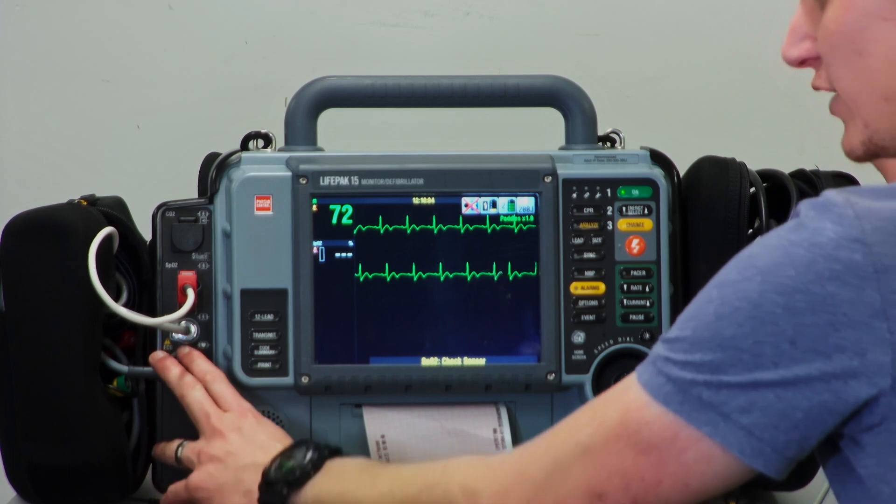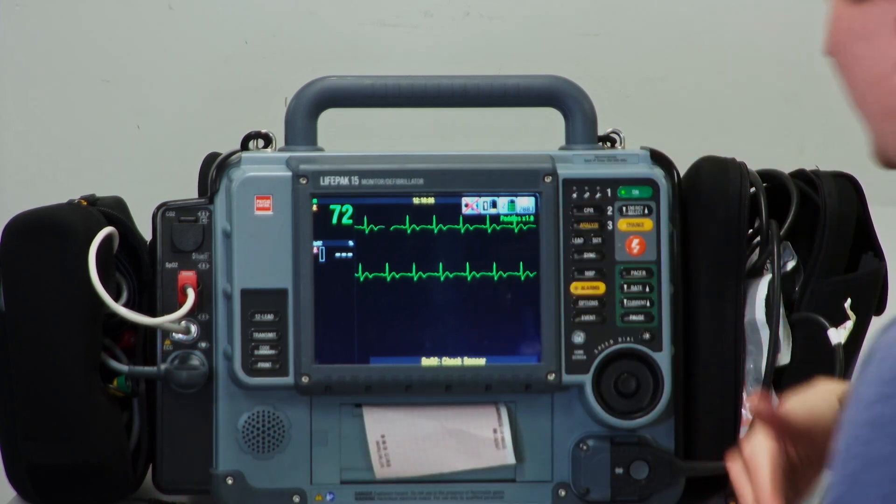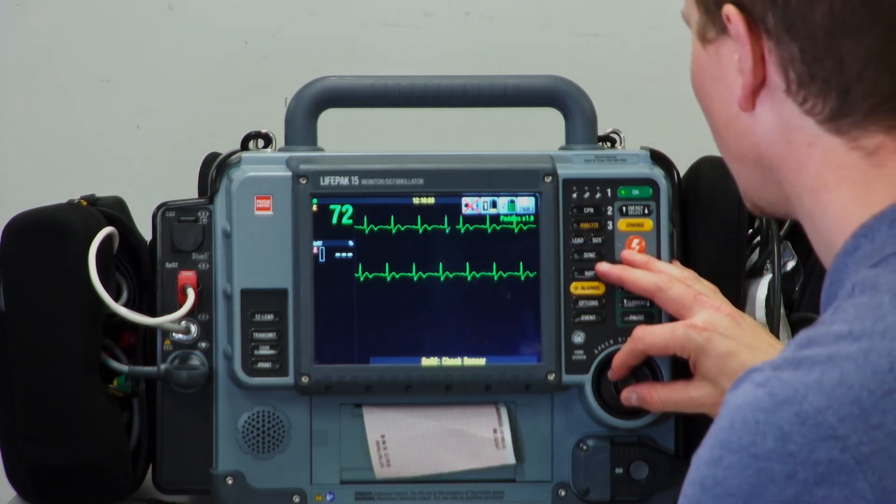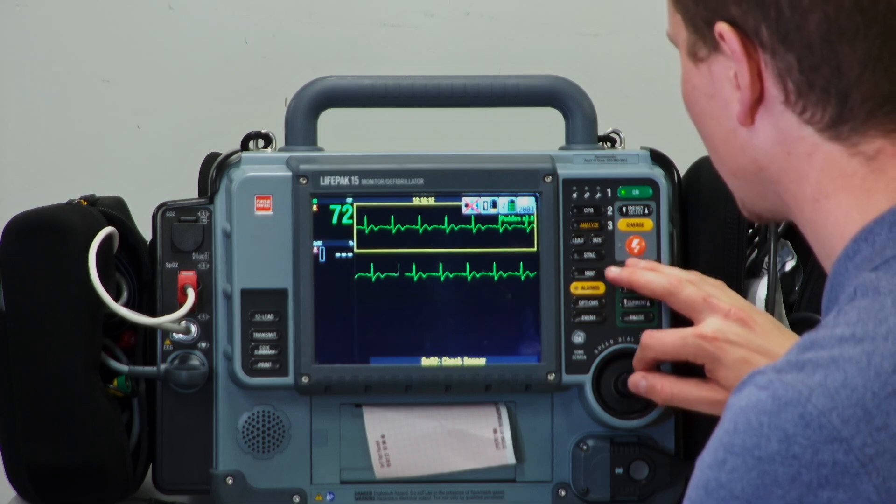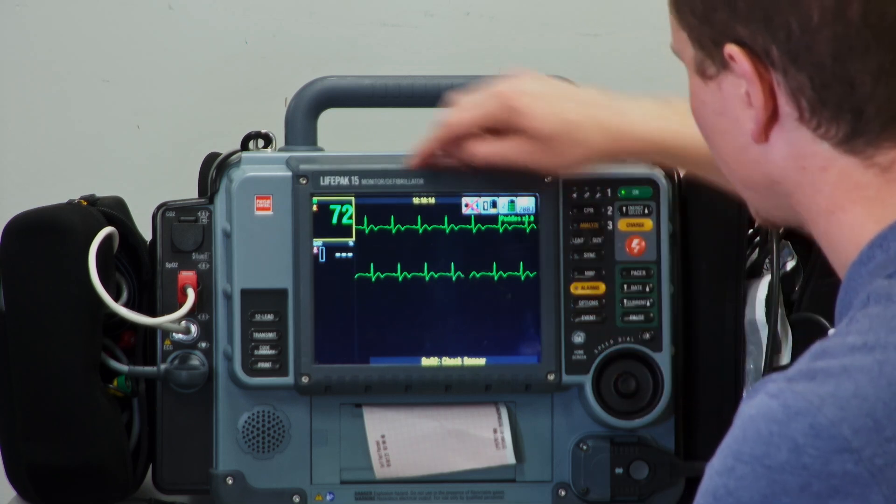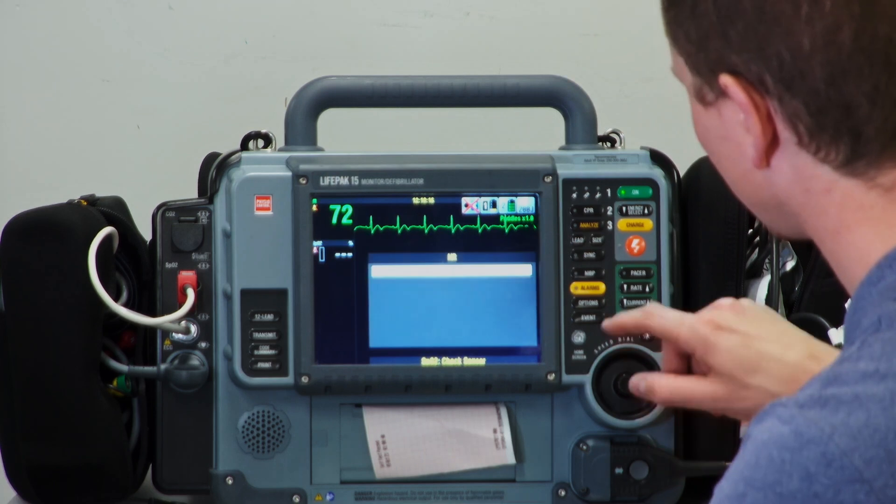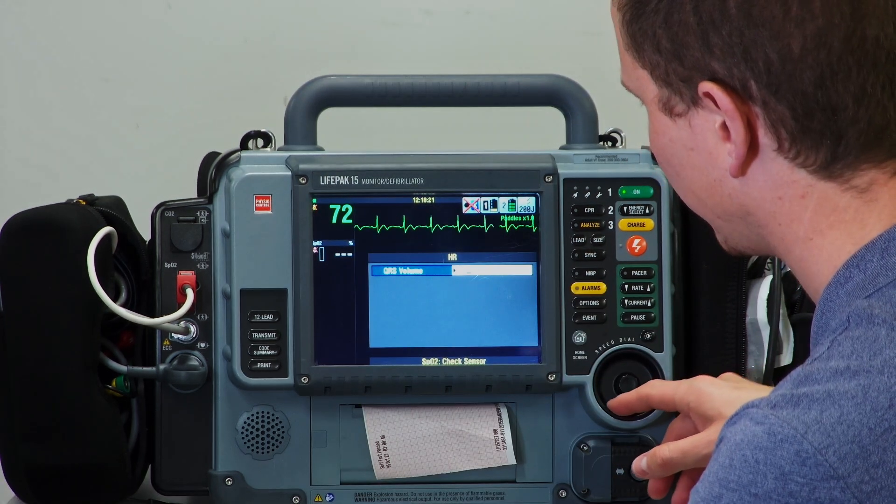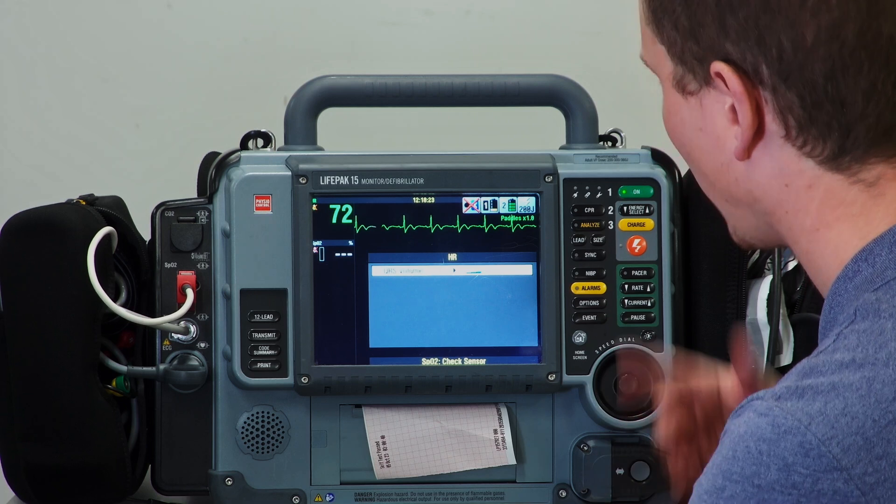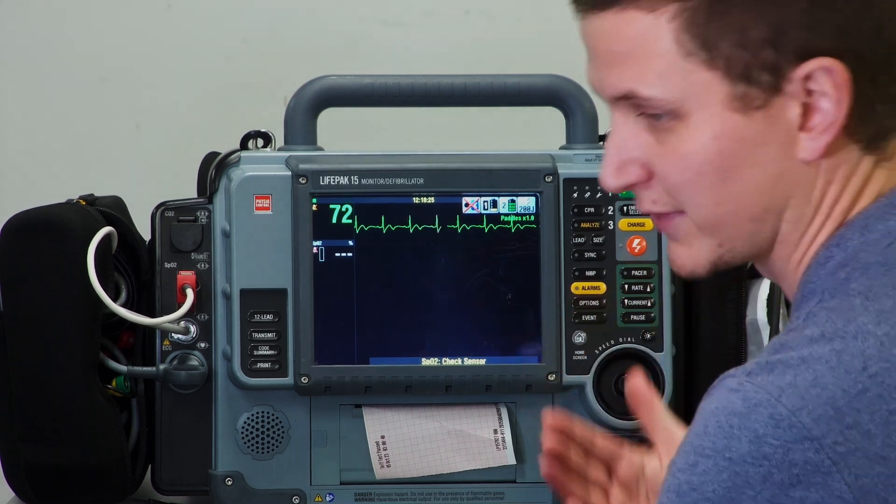From that point on we can start to turn the knob and you can see we can control things. If I select at the top, if I put it over the heart rate and select heart rate, it says QRS volume. Now there is no QRS volume, but if I increase it we can now hear the rhythm that's being generated. We can turn it off.